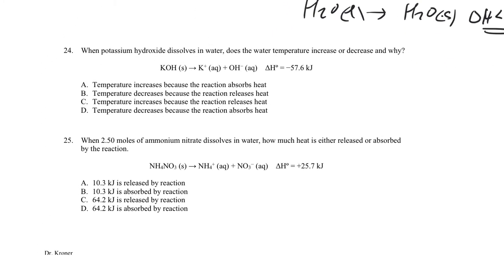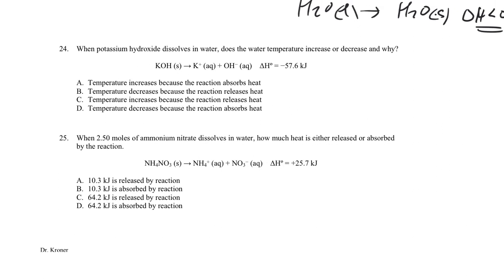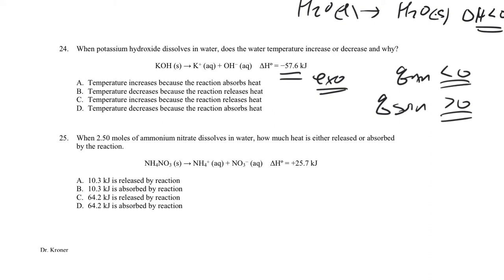Problem 23: when potassium chloride dissolves in water, the given ΔH = −57.6 kJ. A negative ΔH means the reaction is exothermic — it loses heat. That heat goes into the solution, so the solution absorbs heat: q_solution > 0. Since the surroundings (the solution) absorb the heat the reaction lost (q_reaction = −q_surroundings), the solution temperature increases.